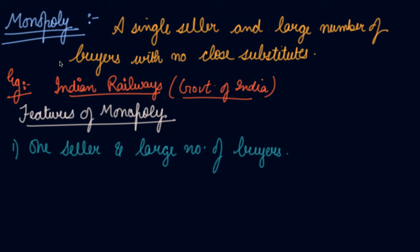However, there is a large number of buyers of the product. Take the example of Indian railways — Indian railways are the only ones running rails on the track in India, and we all use the Indian railways. There are a very large number of buyers and only one seller in the market. This is the perfect example of monopoly.